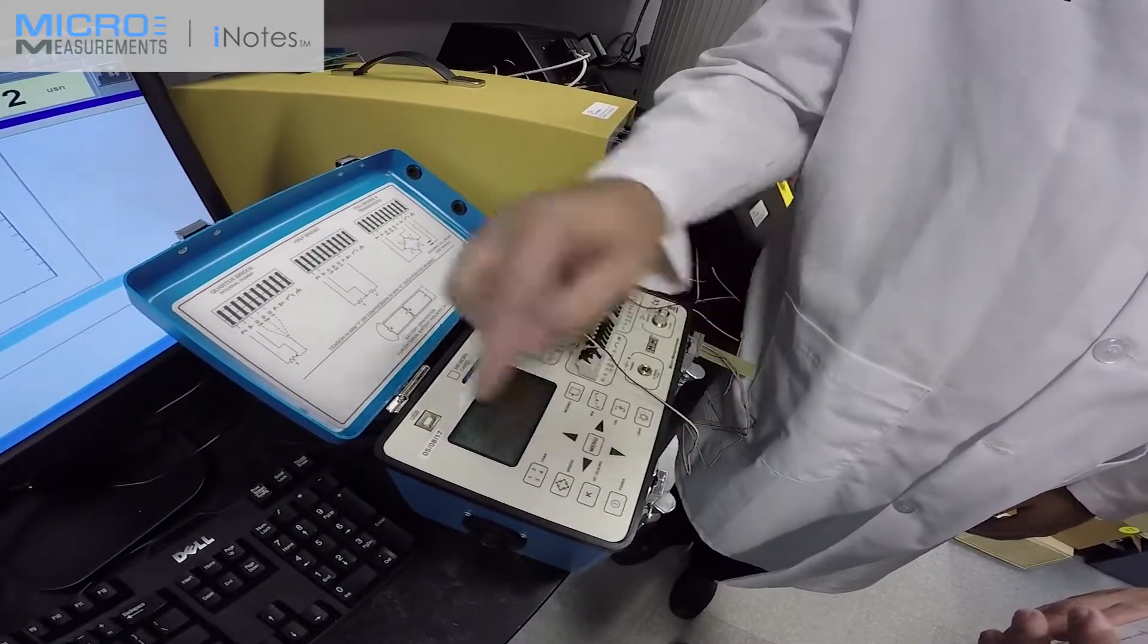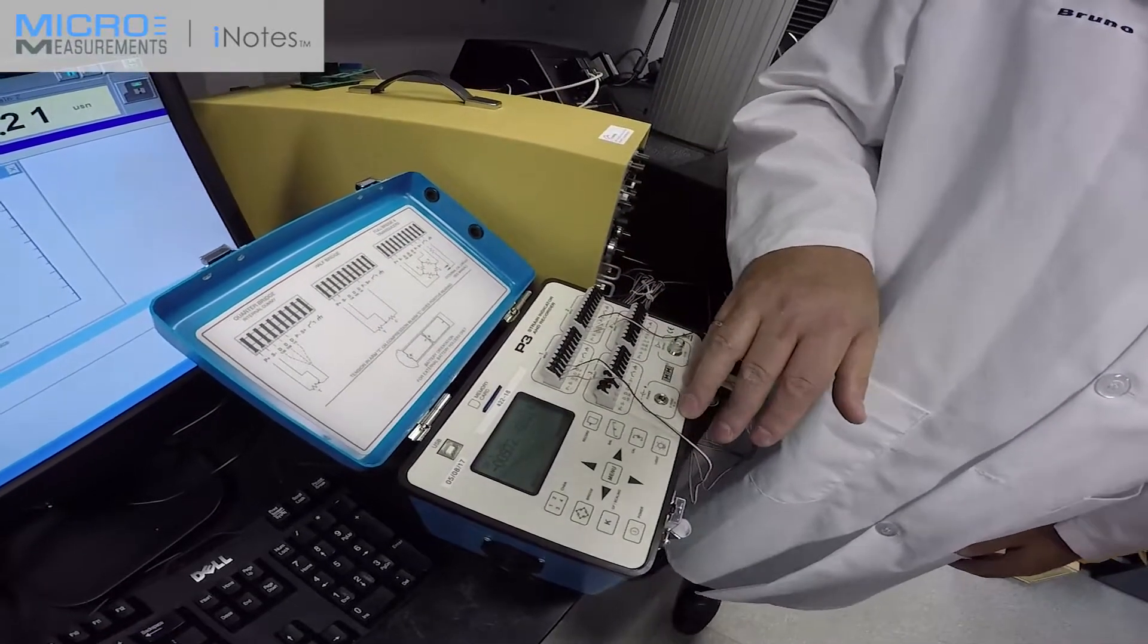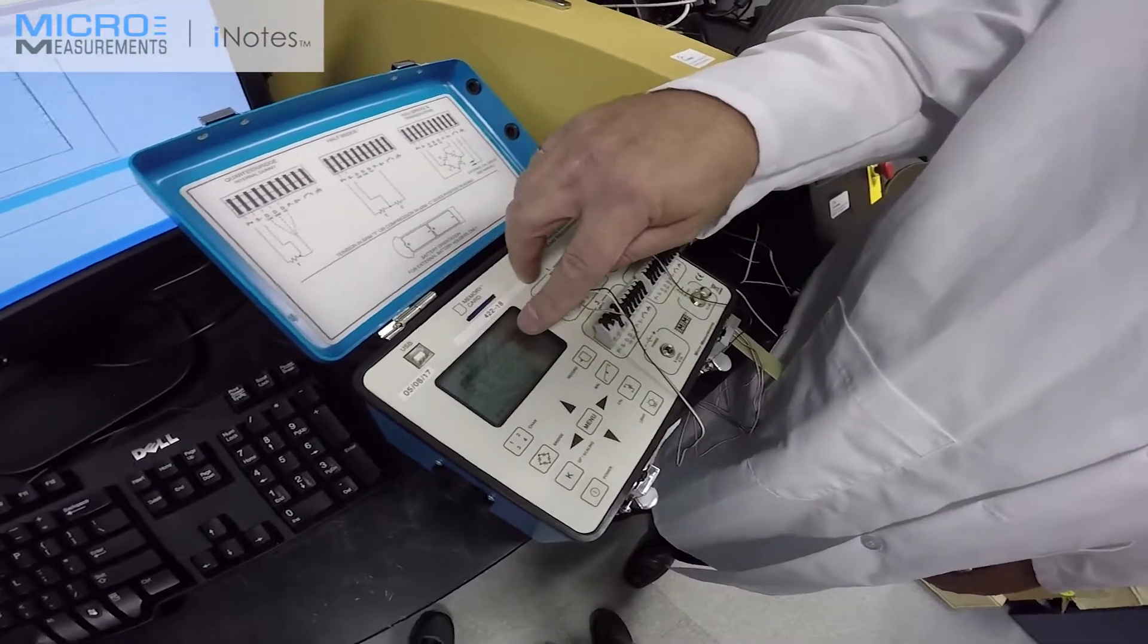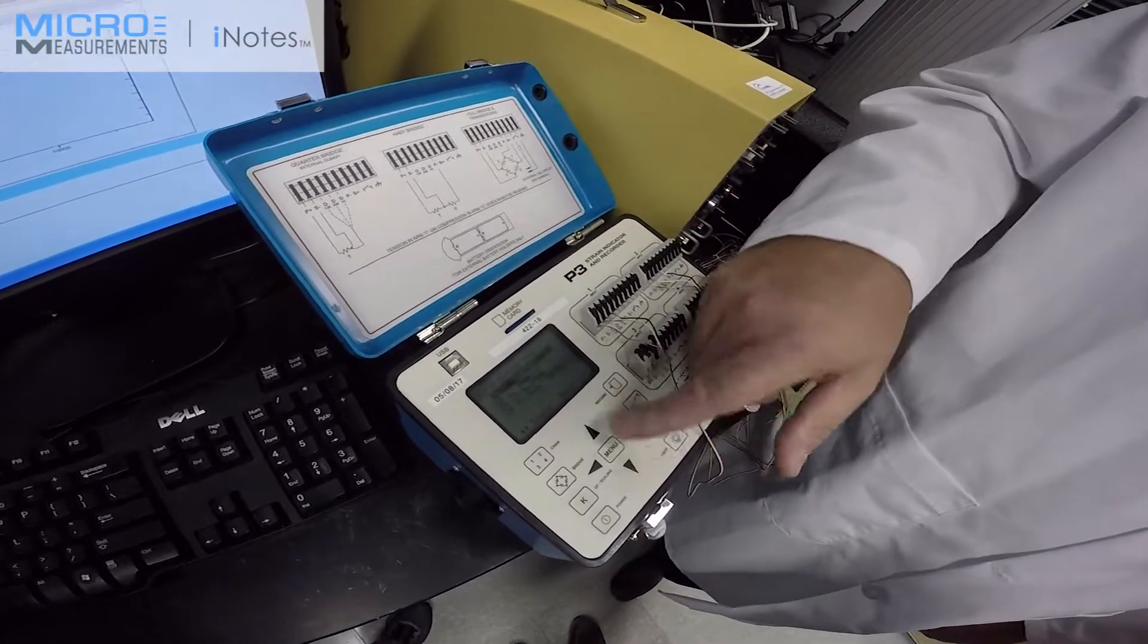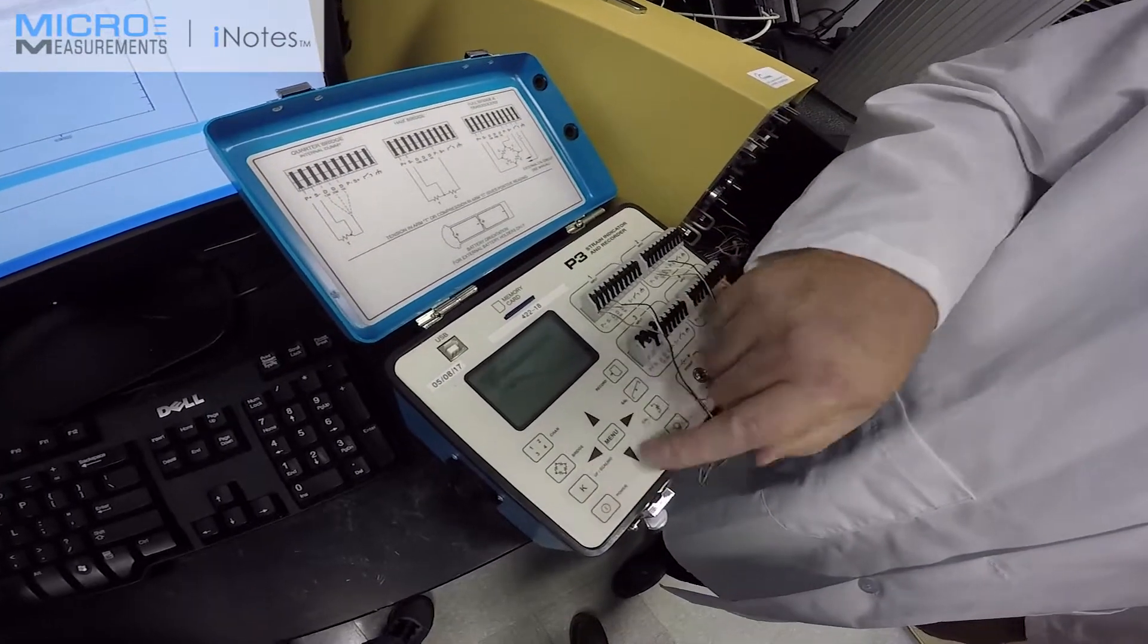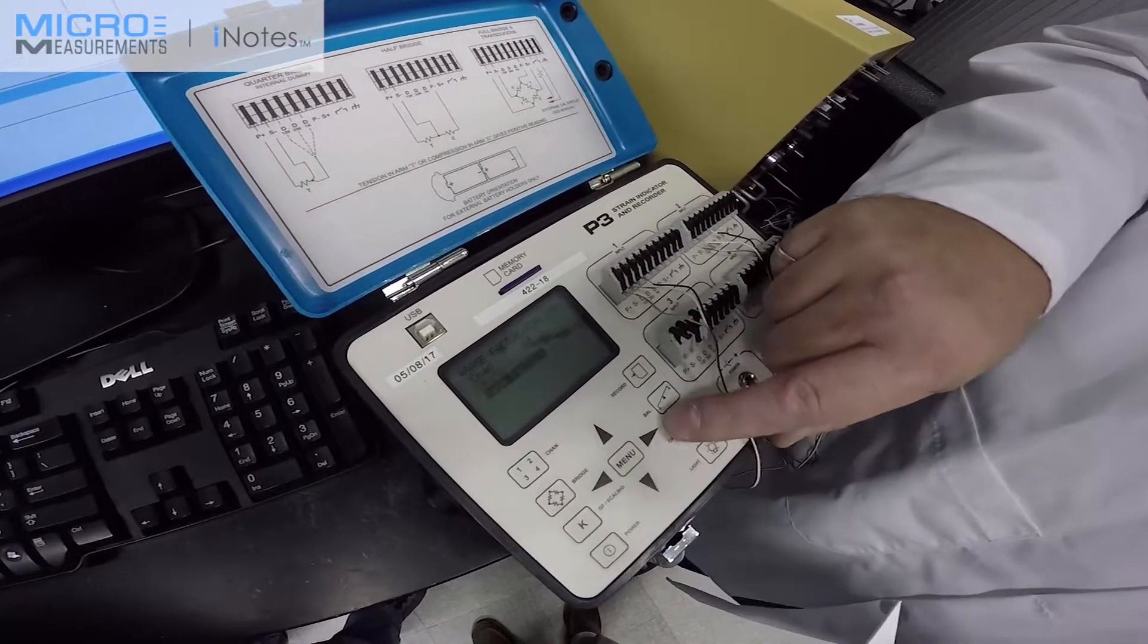As far as we're concerned, we're using two channels, one and two. The P3 has capabilities to go to four. The bridge, actual bridge, we're using, as you can see here, quarter bridge for one and two. The other three and four are not being used. And if we look at scaling, this is where we would enter the actual information.